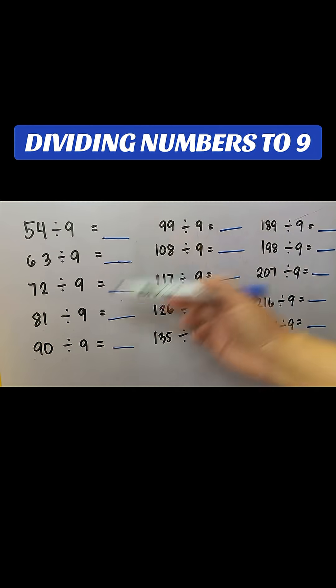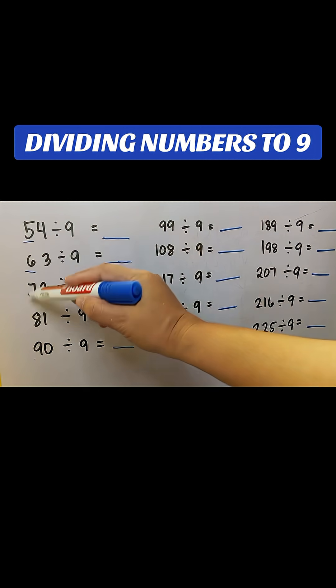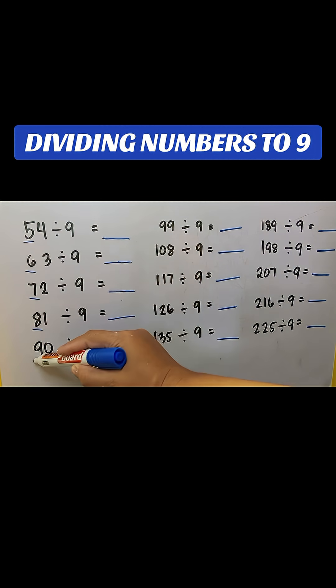Divide numbers to 9. Add 1 to the first digit if it is 90 or less.